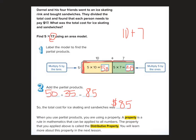So here we go. When you use partial products, you are using a property. A property is a rule in mathematics that can be applied to all numbers, right? Sometimes you guys will find patterns or rules, but it only works for a specific problem. A property is something that can be used for every single number, every single situation, because it runs true for all numbers. The property that you applied above is called the distributive property, and we're going to learn more about this in the next lesson.